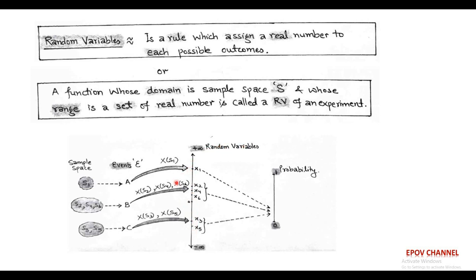Since events A, B, and C cannot be represented mathematically and they are random outcomes, we assign these events a real number called random variables. So random variables are expressed as a function. For event A, random variable is x(S1) or simply x1. For event B, random variables are x(S2), x(S4), and x(S6), or simply x2, x4, and x6. For event C, random variables are x(S3) and x(S5), or x3 and x5. These random variables are a set of real numbers within a range of minus infinity to plus infinity, and the probability of all random variables must lie between 0 and 1.